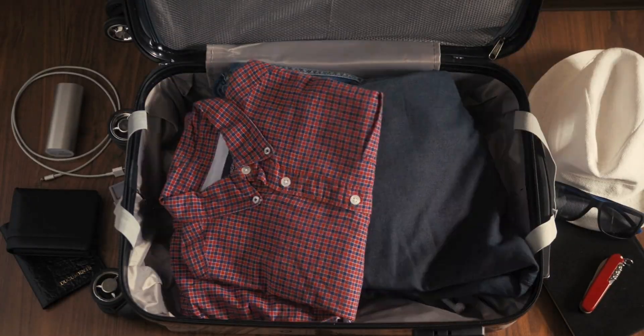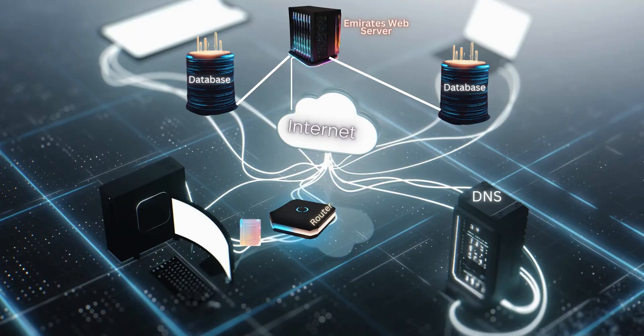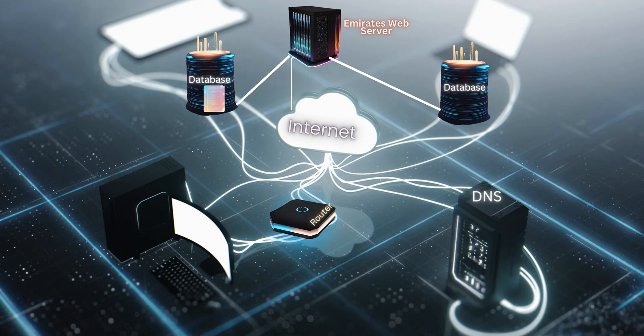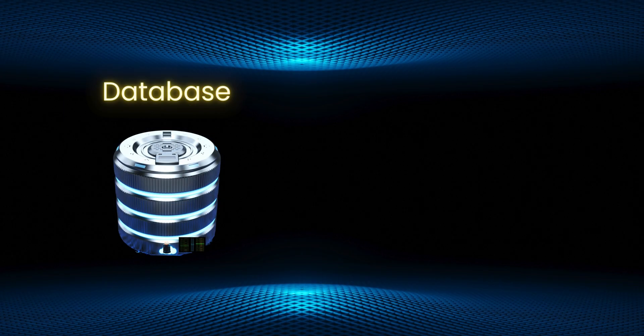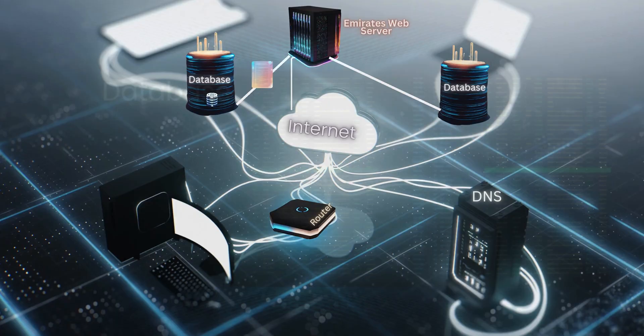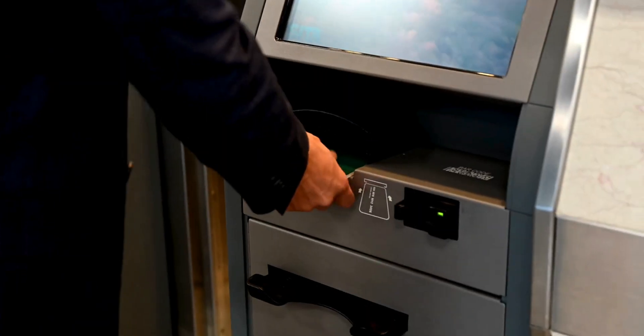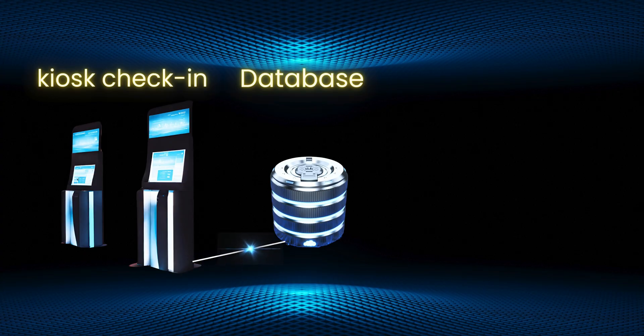Go shopping, pack your bags, and if you're a vlogger, grab your camera and make a travel vlog. There are three ways to collect your boarding pass. First, collect it at home by logging into the Emirates website before departure — your device sends a request to your home router, which forwards it to your ISP, which establishes a connection to the Emirates web server. Second, at the airport, you can use a check-in kiosk machine — enter your booking details or scan your passport, and these kiosk machines interact with the database to retrieve your information.